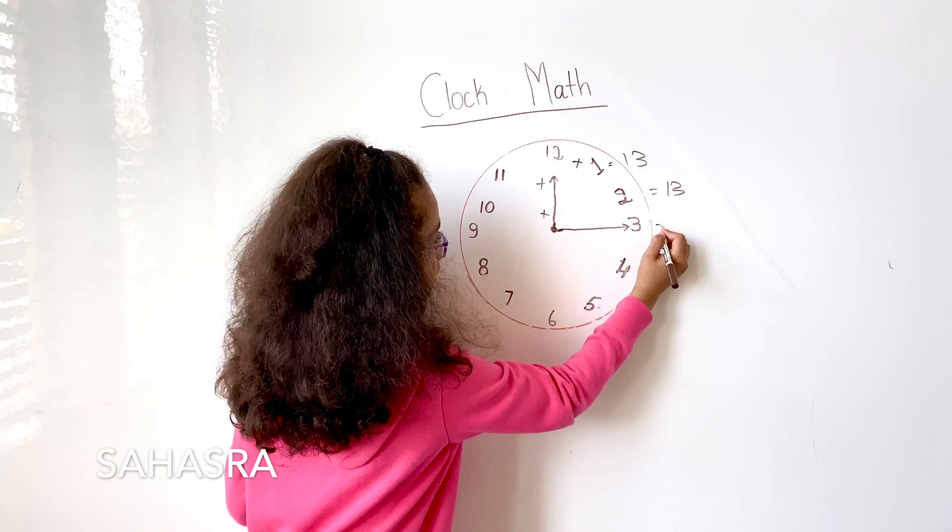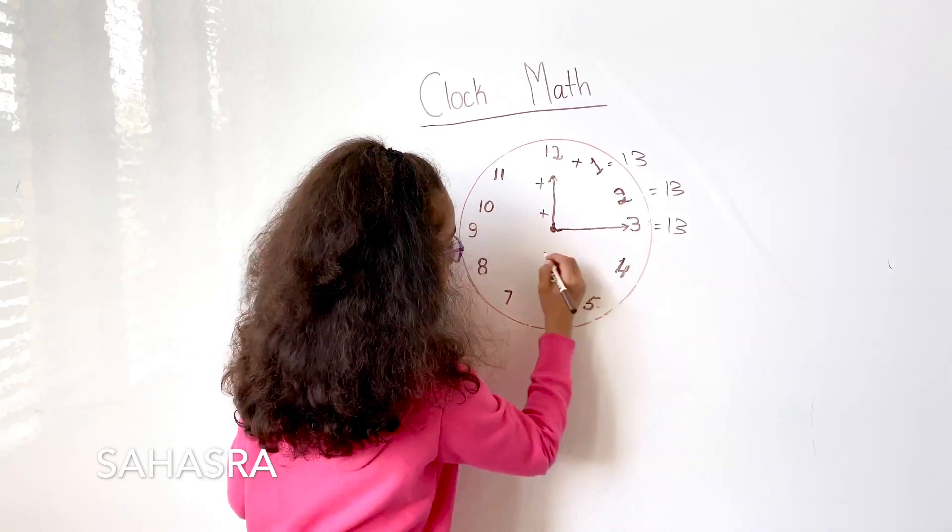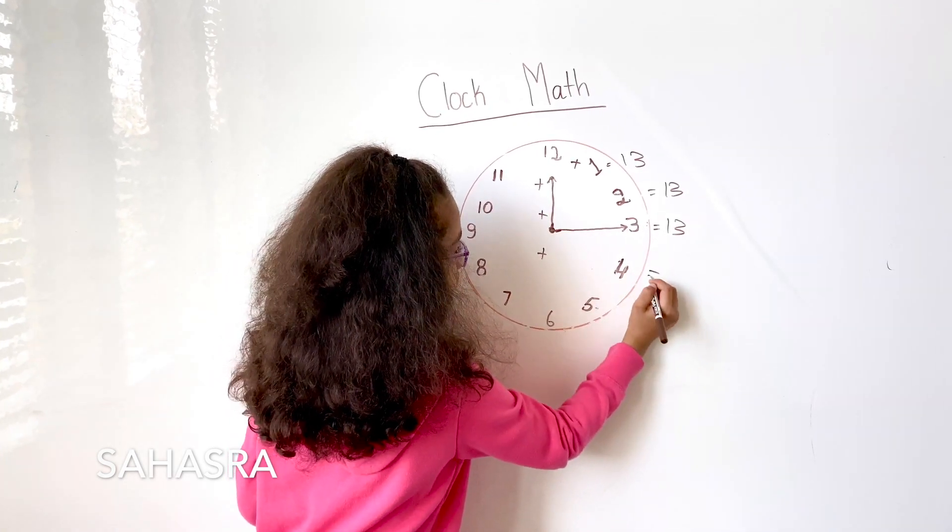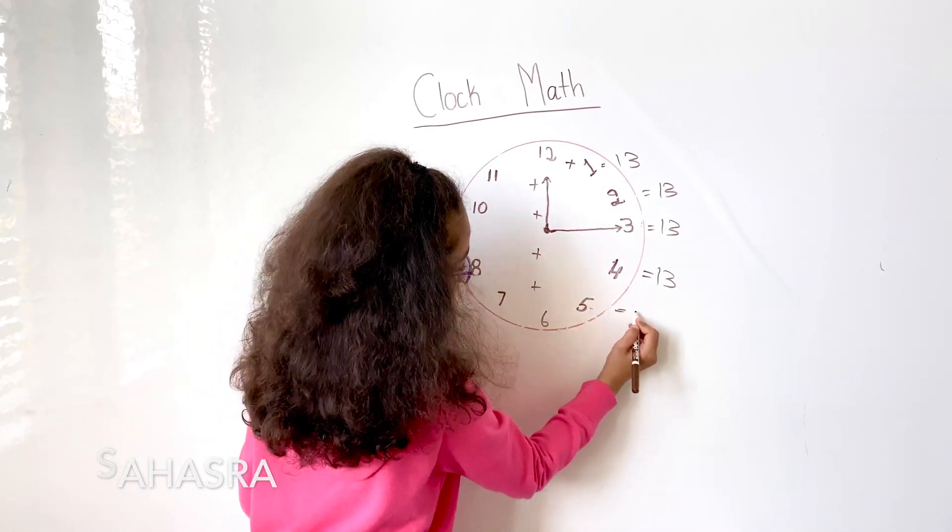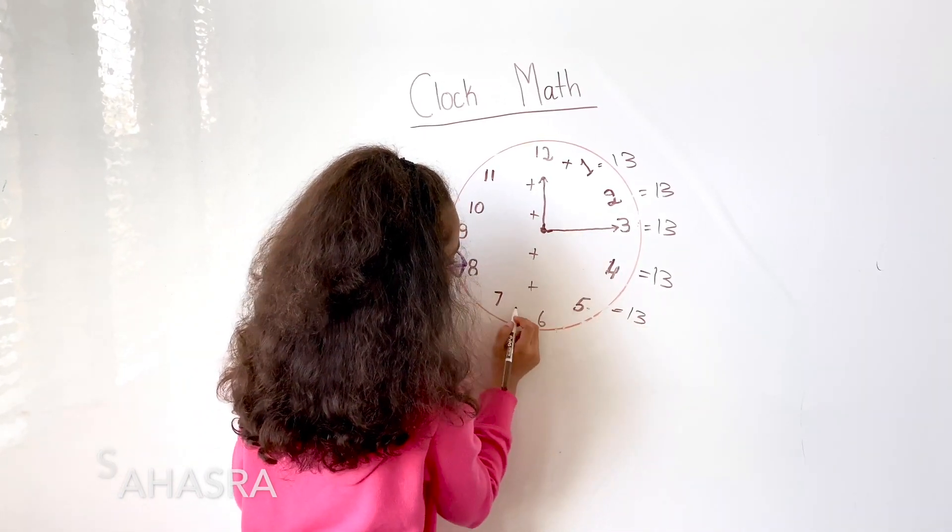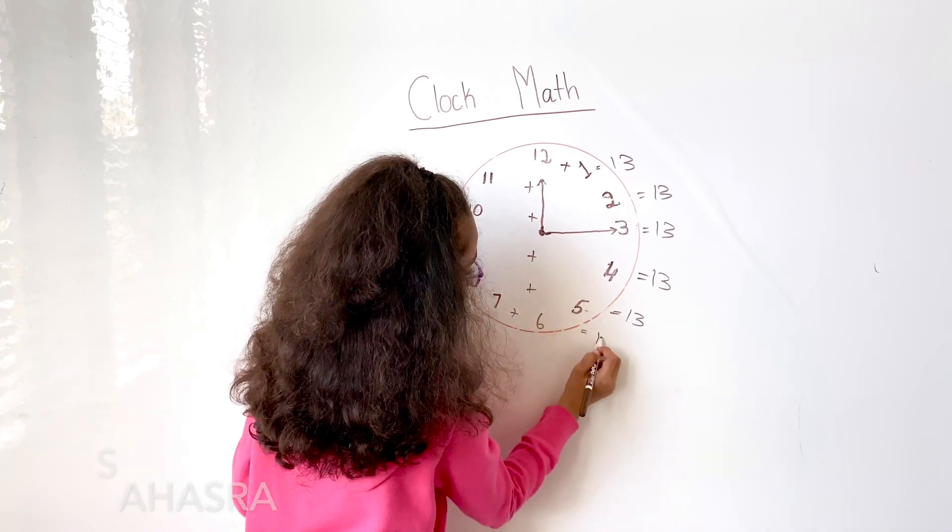And 10 plus 3 equals 13. 9 plus 4 equals 13. 8 plus 5 equals 13. And 7 plus 6 equals 13.